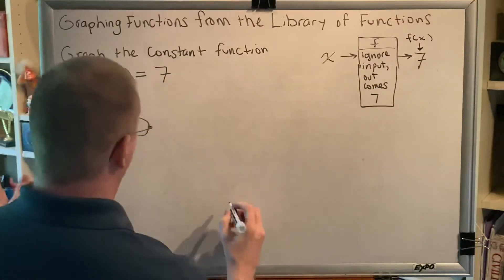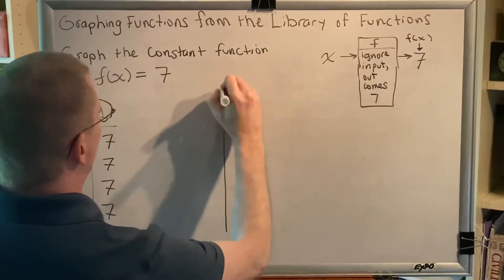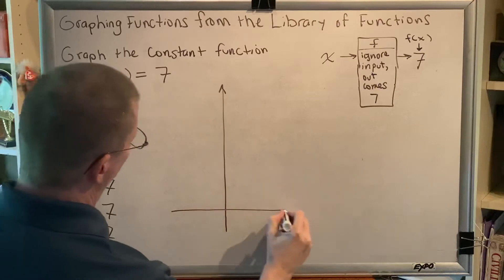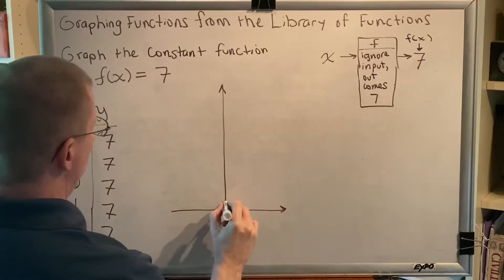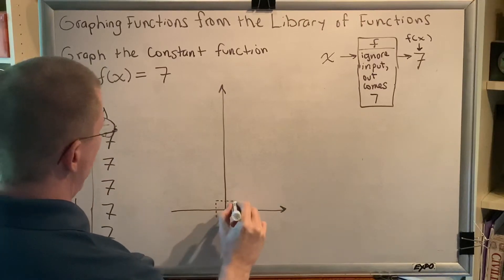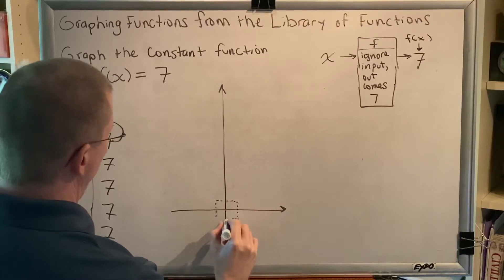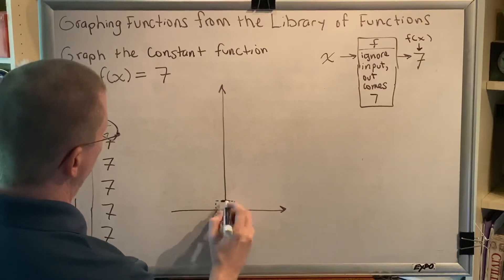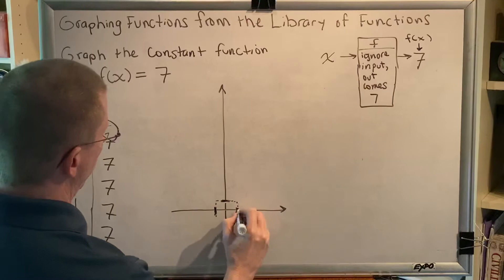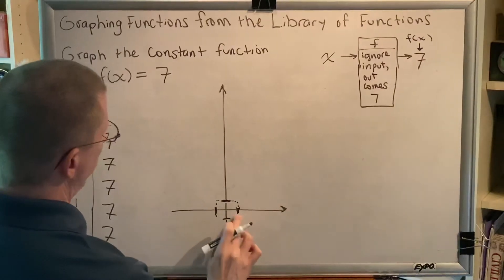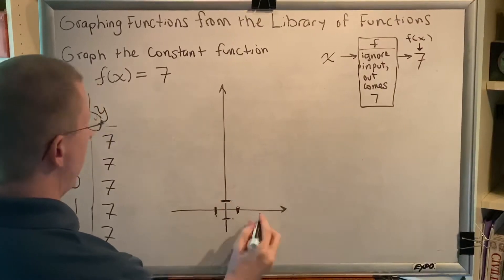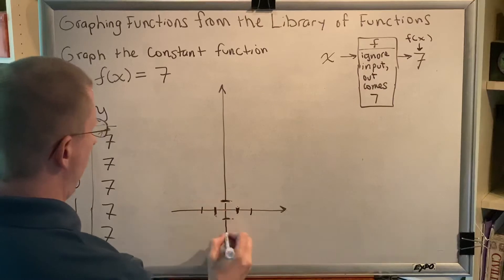All right, so now we're going to create our graph. I'm going to make a dash square centered at the origin, which gives me the location of 1 and -1. And then when I erase the corners, that allows me to make a consistent graph scale.